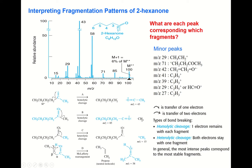Another fragmentation type is heterolytic cleavage. In homolytic cleavage, the bond breaks and electrons are equally distributed — one to each fragment. In heterolytic cleavage, both electrons move entirely to one fragment, forming an ion and a radical. The radical is not detected, but the methyl cation — an ion — is detected at mass number 15.